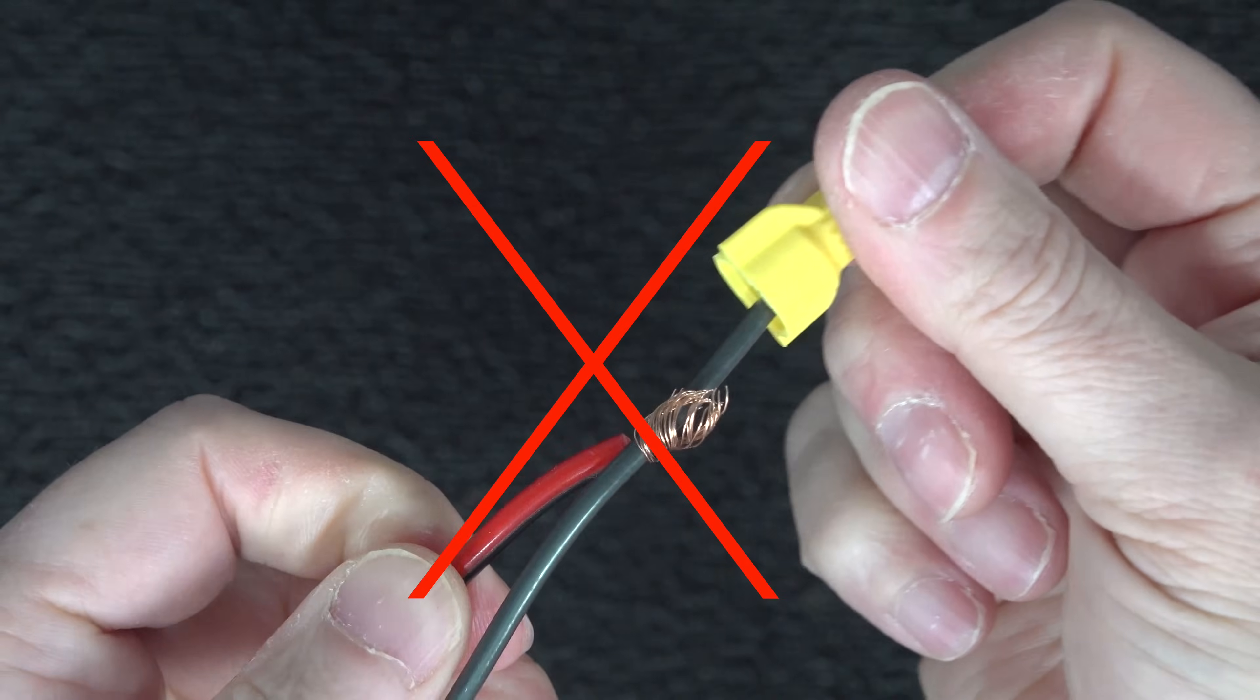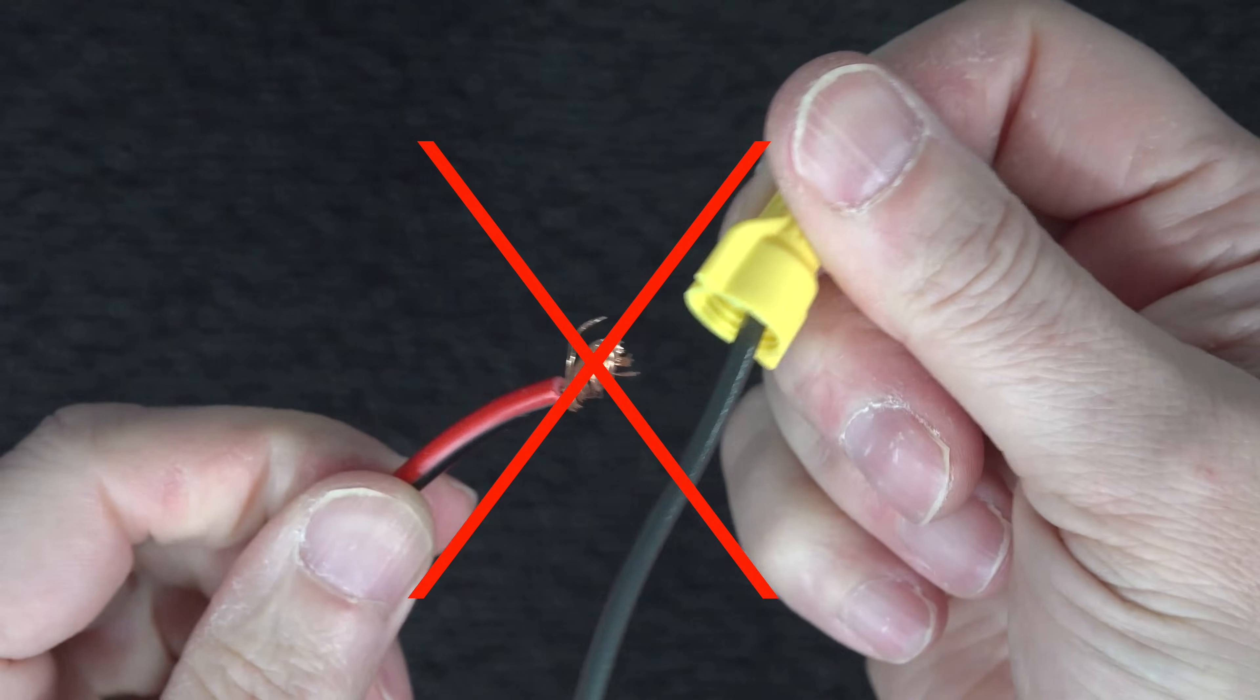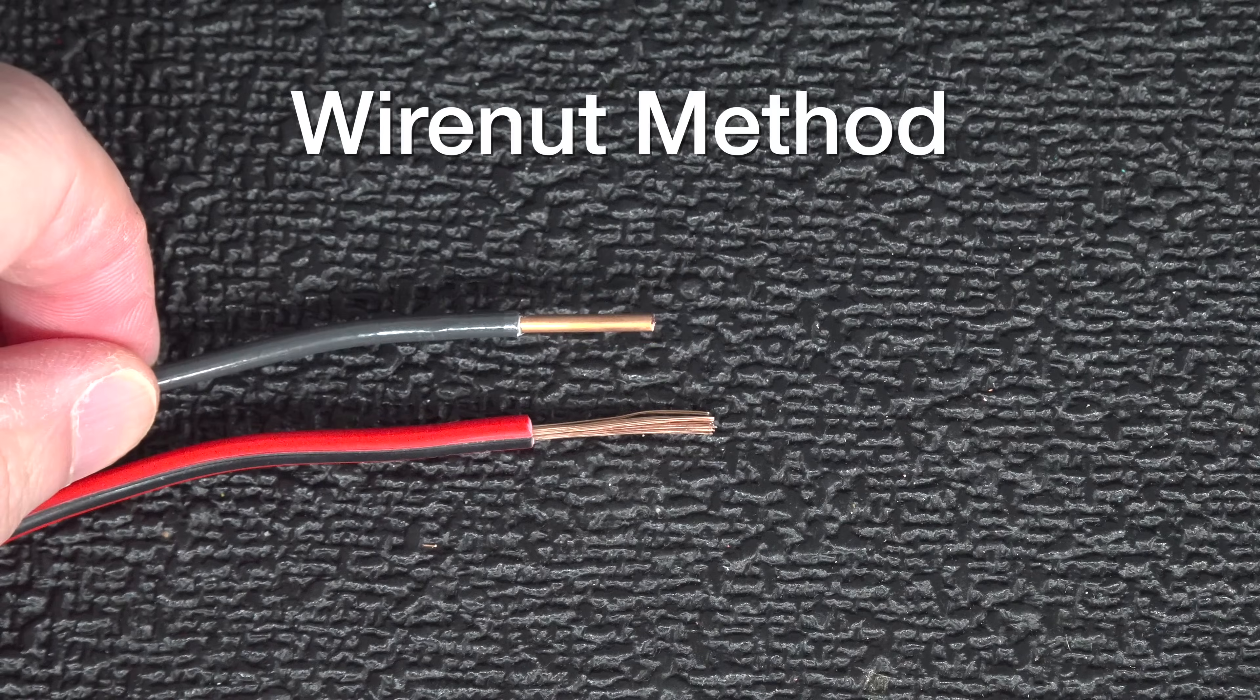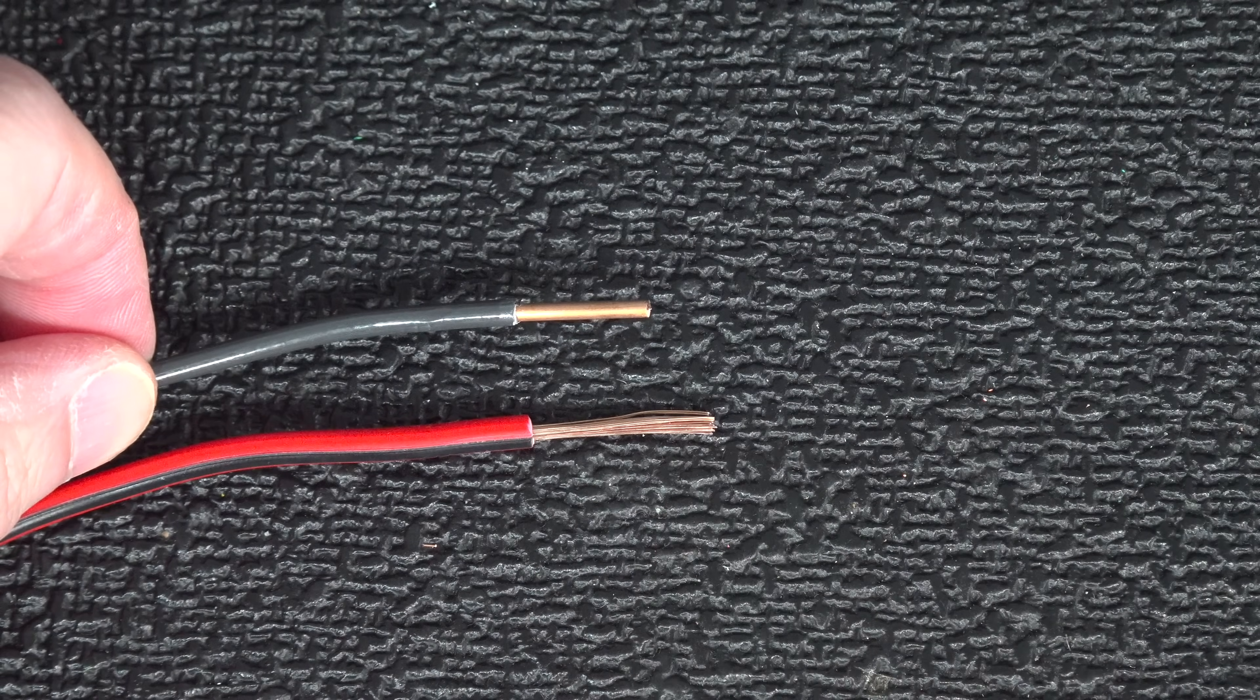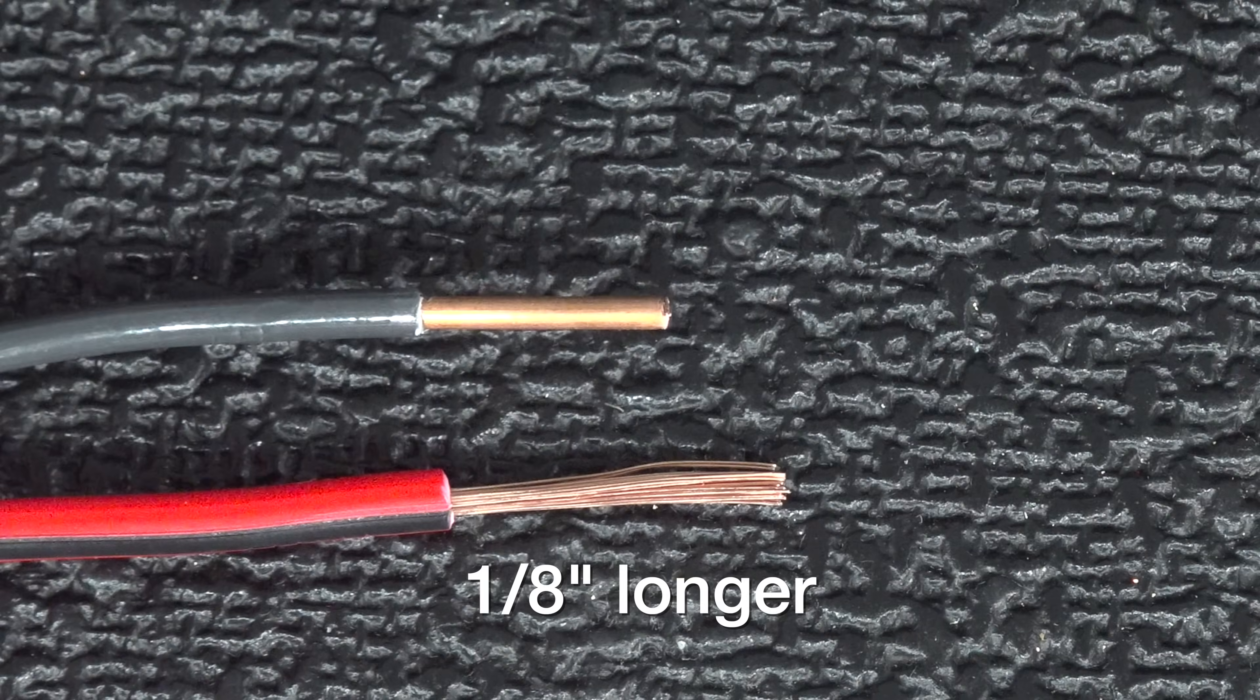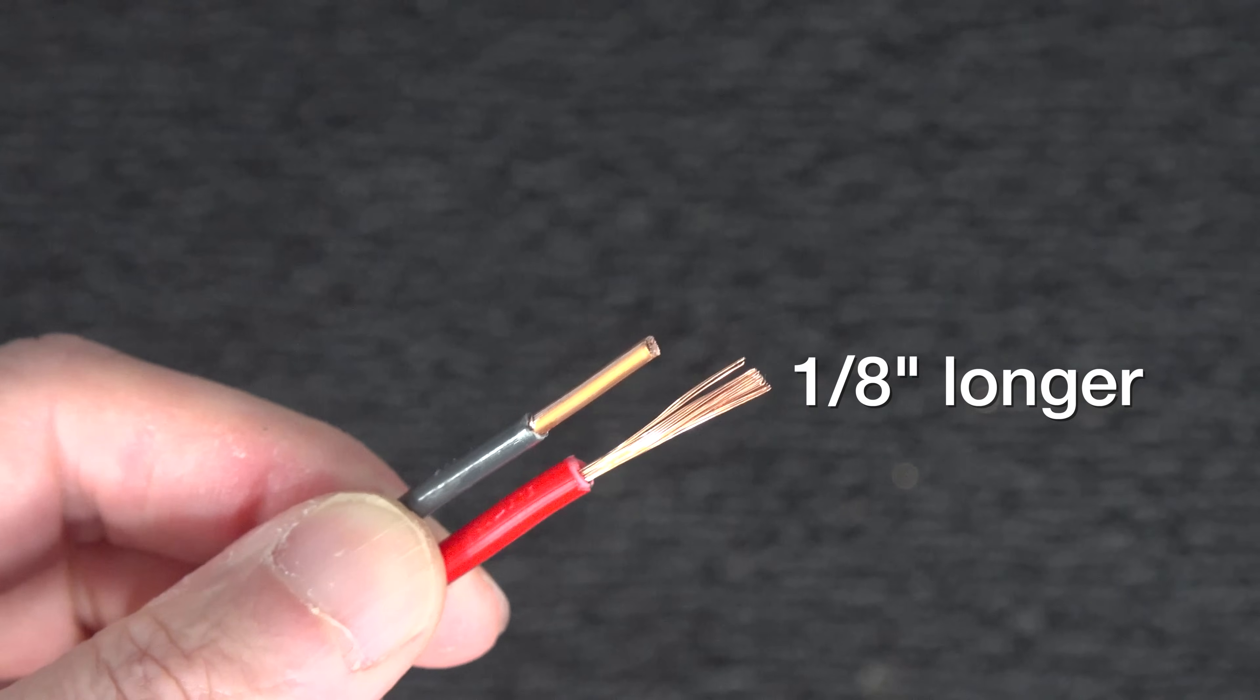I'm going to show you how to make these connections like a pro and give you two different ways you can do it. The first is using just a regular wire nut, but the tip isn't around the nut itself. It's how you strip the wire. You want to make sure that you're stripping that stranded conductor about an eighth of an inch longer than the solid one.